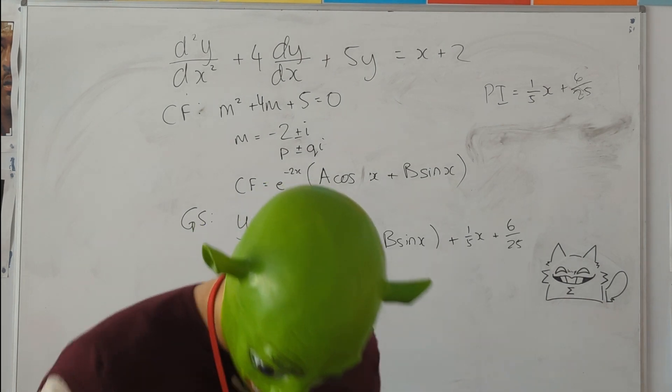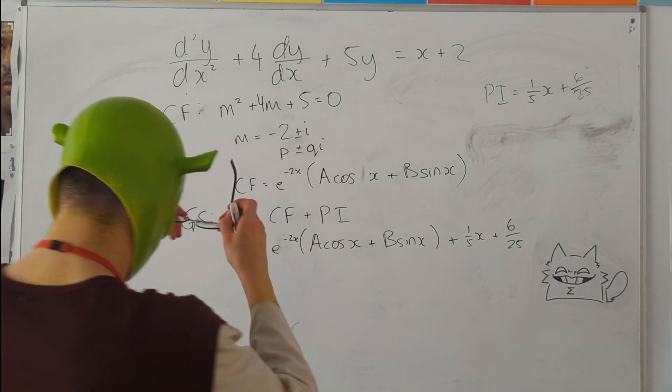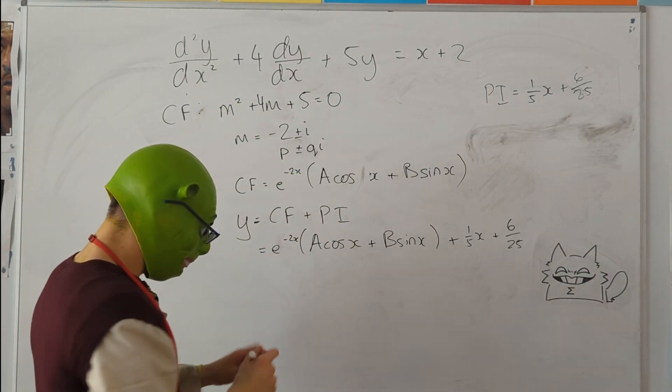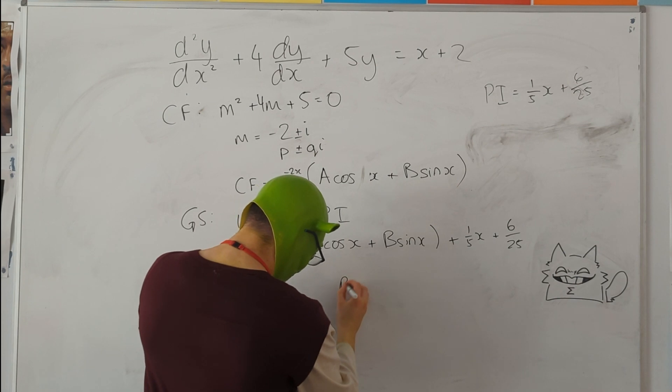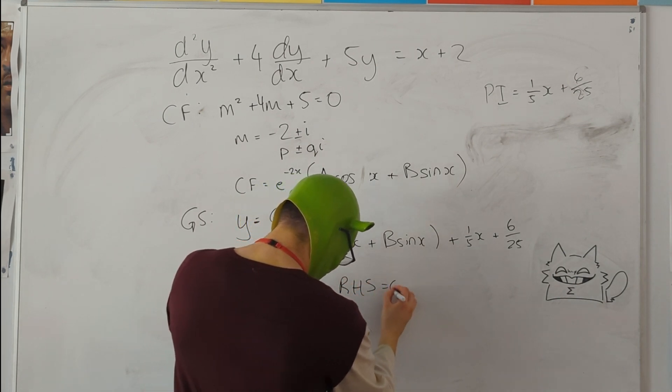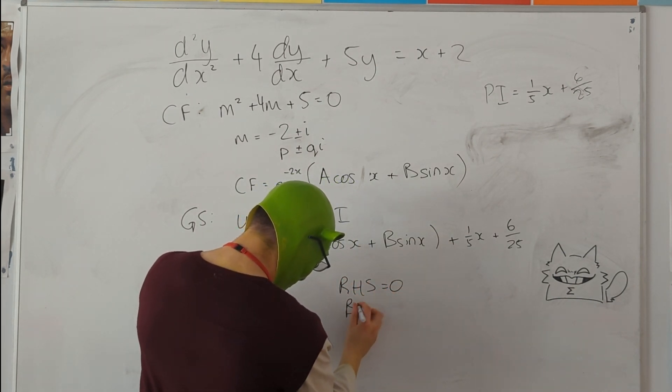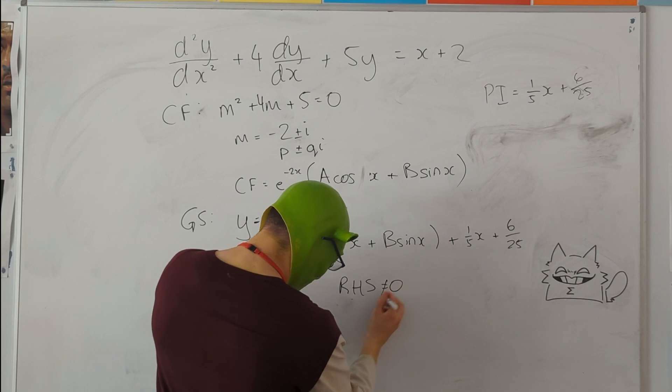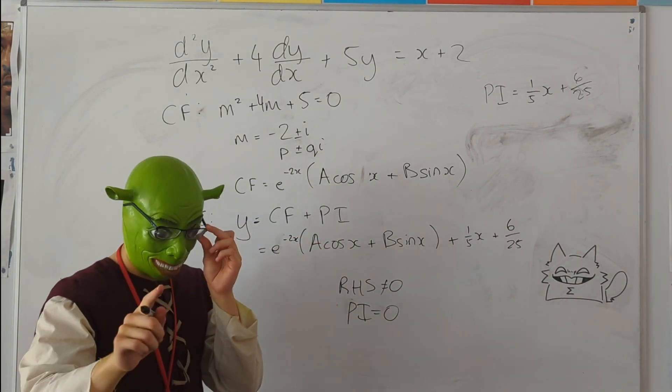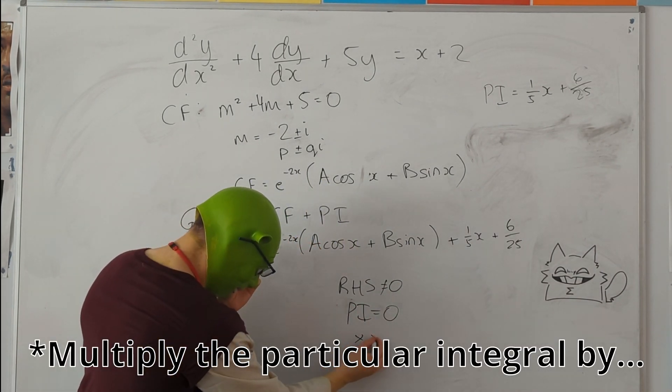Now, the special case is when the right-hand side is not equal to zero, but you end up with a particular integral equal to zero. If that happens to you, then simply multiply it by x.